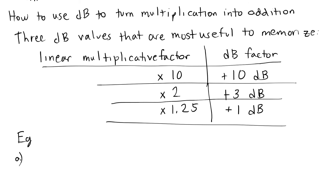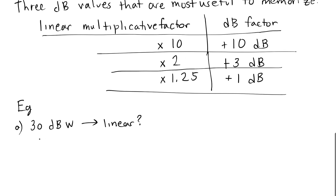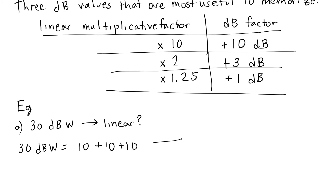For example, convert 30 dB into linear. I'm not going to use the conversion formula — I'll use these multiplicative factors. 30 dB is 3 times 10 dB, meaning I'm adding 10 three times, so in the linear domain I'm multiplying by 10 three times. Taking 1 watt as the reference and multiplying by 10, by 10, and by 10, I get 1000 watts.